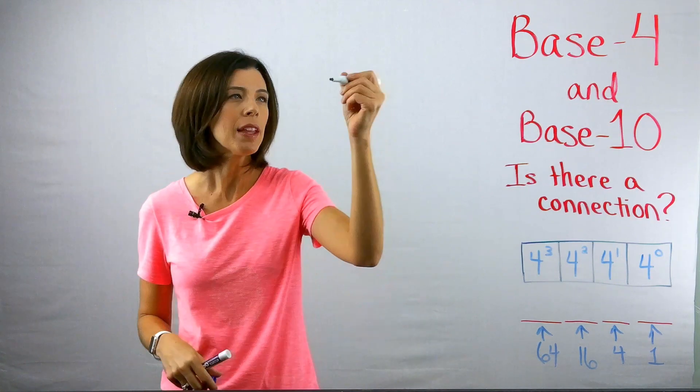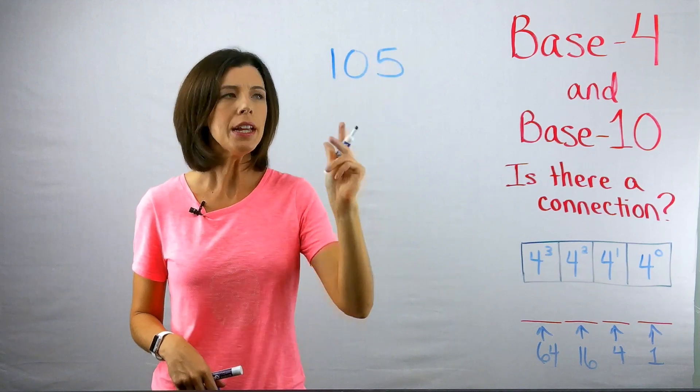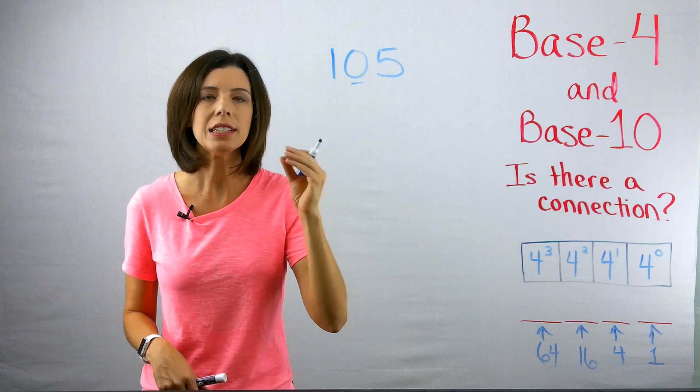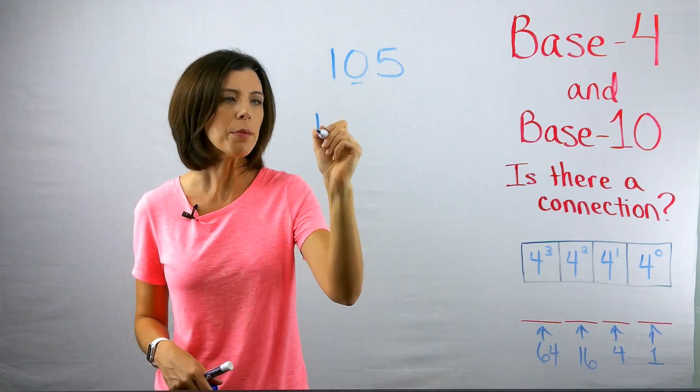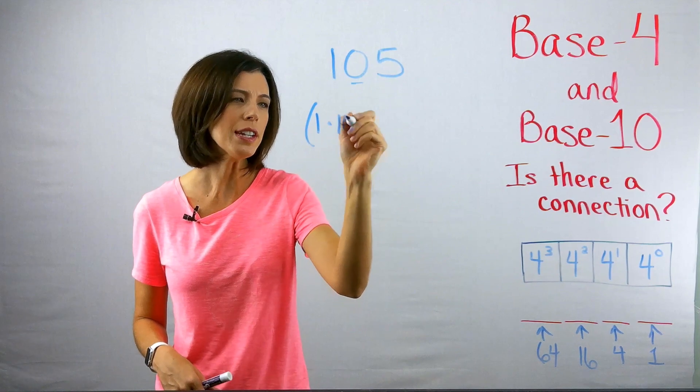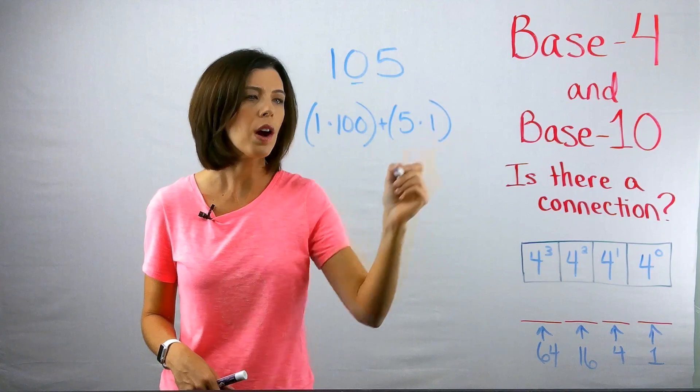A student once asked me, in the number 105, is it important that students understand that zero represents zero groups of 10? In other words, if I'm writing the expanded notation, couldn't I just write one times 100 plus five times one?